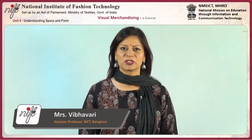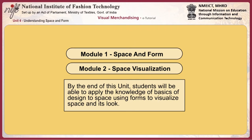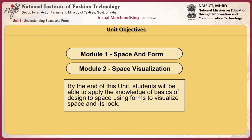Welcome to the unit on understanding space and form. This unit deals with the application of understanding from the previous chapter on elements and principles of design in visual merchandising. It also explains the transformation of space through application of these theories. By the end of this unit, students will be able to apply the knowledge of basics of design to space, using forms to visualize space and its look.